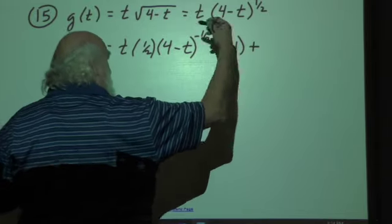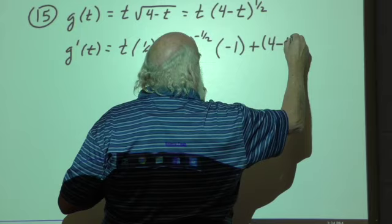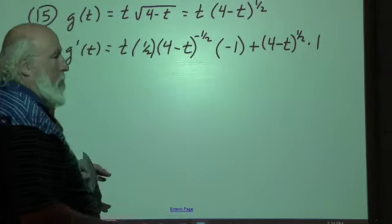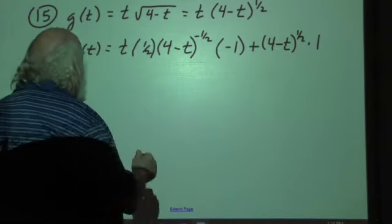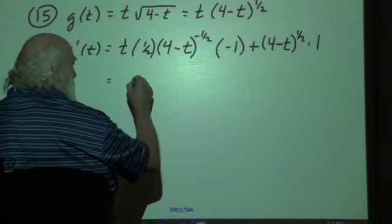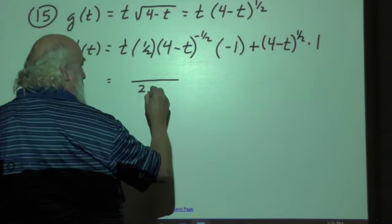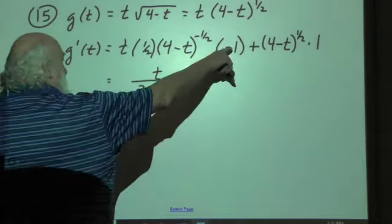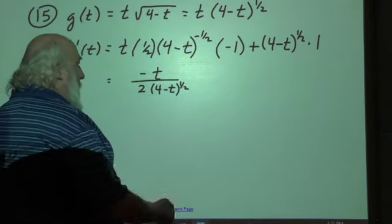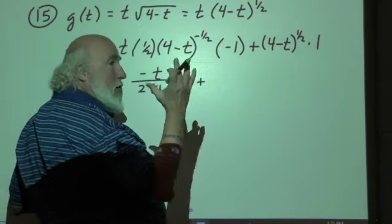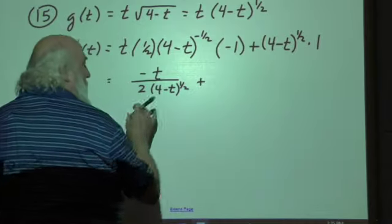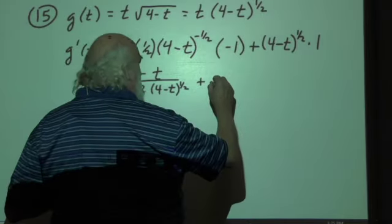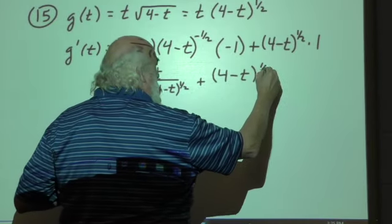Now, I take that and then I take 4 minus t to the 1 half times the derivative of t, which is 1. So I want to get this ugly spud being somewhat redeemable and works here. So the 2 is going to be the denominator. The negative 1 half means the 4 minus t is going to be in the denominator. And the t is going to stay on top. And you've got a negative sign here, so that makes that a negative t. Plus, now, I recognize right away here that I've got the same value inside the radical here. So I think I'm going to be able to combine something here to make this, again, more palatable.